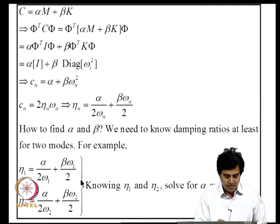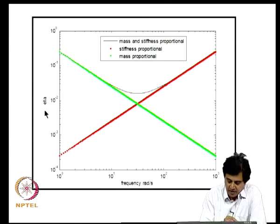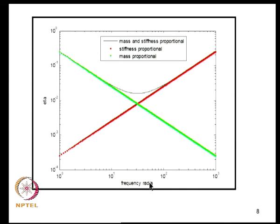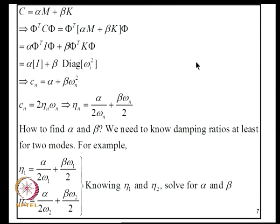Using Rayleigh damping, the damping ratio as a function of frequency has a characteristic behavior with two open parameters alpha and beta. We determine alpha and beta by writing equations for two modes with known damping ratios and solving simultaneously. Once alpha and beta are found, damping ratios for all other modes are evaluated from this equation.